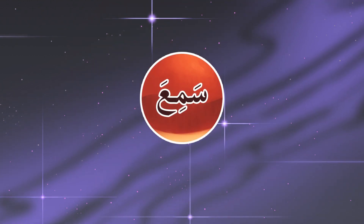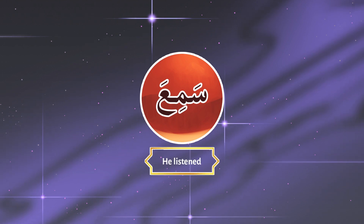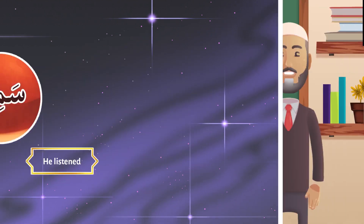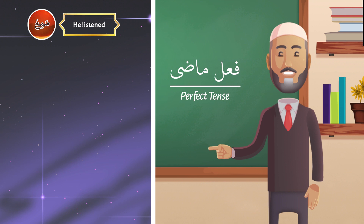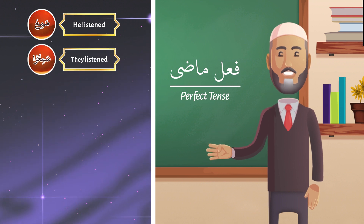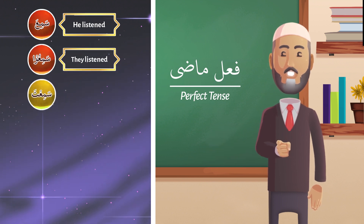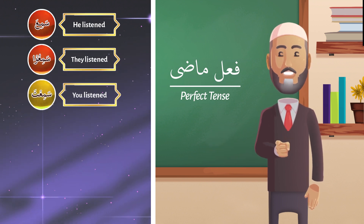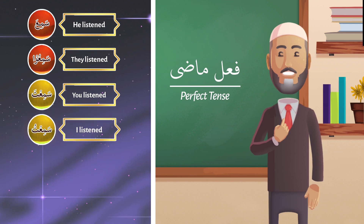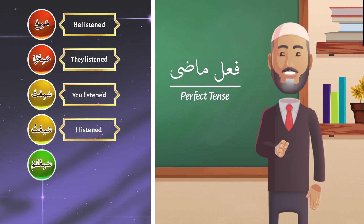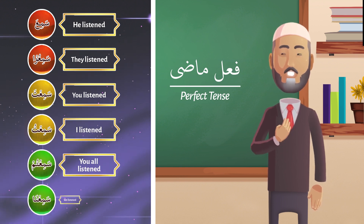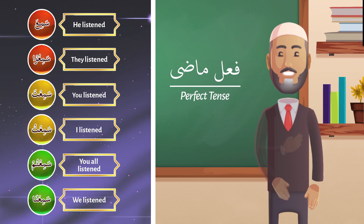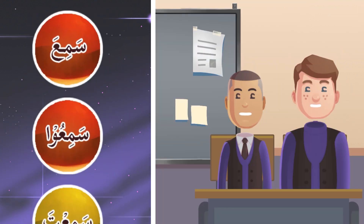Let's take another verb: سمع. We listen to this: سمع الله لمن حمد. So سمع means 'he listened.' Translate using TPI: سمع — he listened. سمعوا — they listened. سمعت — you listened. سمعت — I listened. سمعتم — you all listened. سمعنا — we listened.